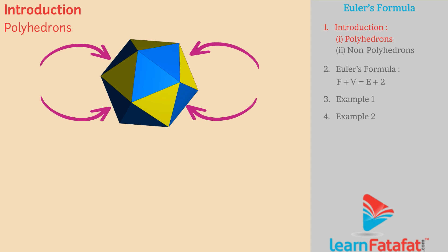The surfaces which are made up of polygonal faces only are polyhedrons. Example: Pyramid.